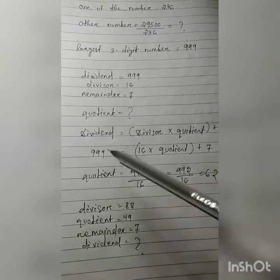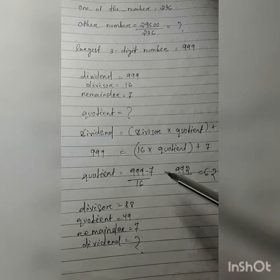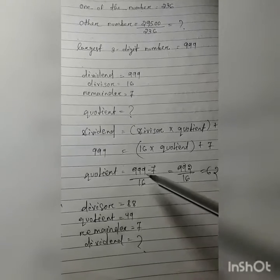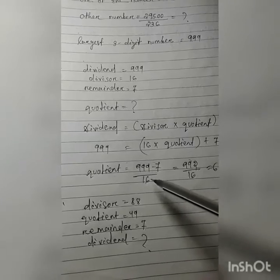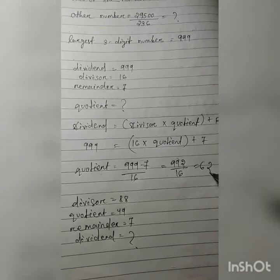Means multiplication changes to division and plus changes to minus. Here plus 7 means minus 7, and multiply 16 means divided by 16. Then your answer is 62.